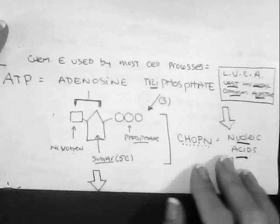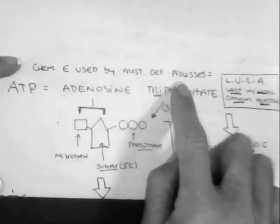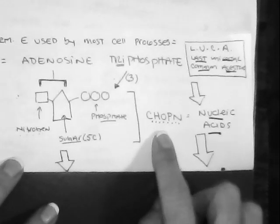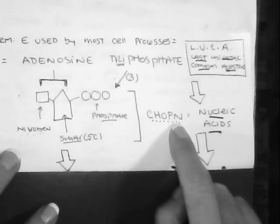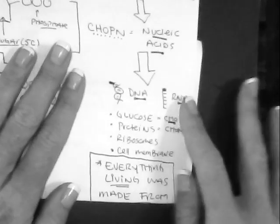Now the most important thing about ATP is that it is the chemical used by most of the cell processes. And so this actually dates back to what's known as LUCA. LUCA is our last universal common ancestor. And LUCA is made up of CHOPON. And so ATP is made up of carbon, hydrogen, oxygen, phosphate, and then our nitrogen. CHOPON, in turn, forms nucleic acids. And so a couple classic examples of nucleic acids we've seen before is DNA and RNA.